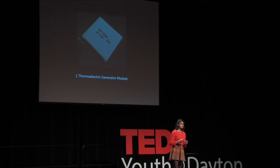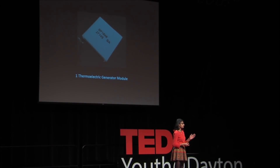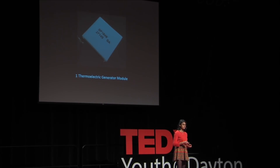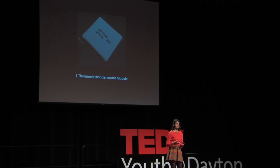Thermoelectric generators, also called TEGs, are these small square devices where if you put a heat source on one surface of the TEG and a cold source on the other surface of the TEG, then the temperature difference will allow for electricity to be produced.